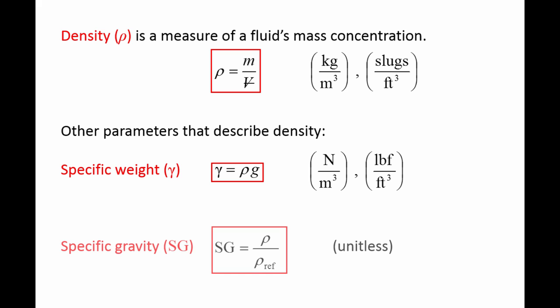The specific gravity of a fluid is its density divided by a reference density. For liquids, this reference density is usually the density of water at 4 degrees Celsius, which is 1000 kg per cubic meter. Specific gravity is unitless.